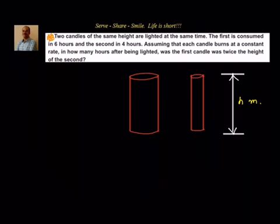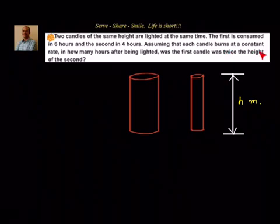Obviously the second candle has less thickness, so it will take very less time compared to the first one. Assuming that each candle burns at a constant rate, in how many hours after being lighted was the first candle twice the height of the second candle?